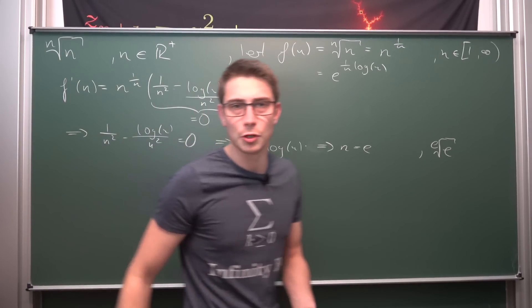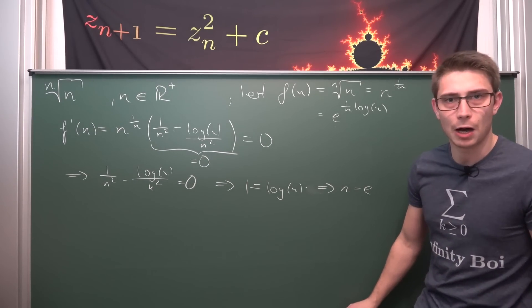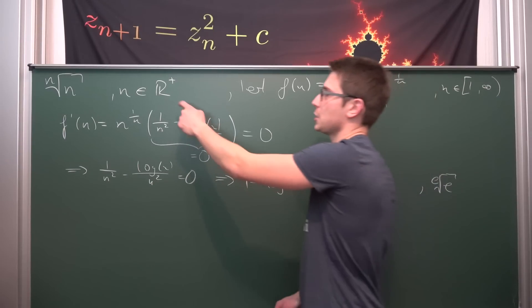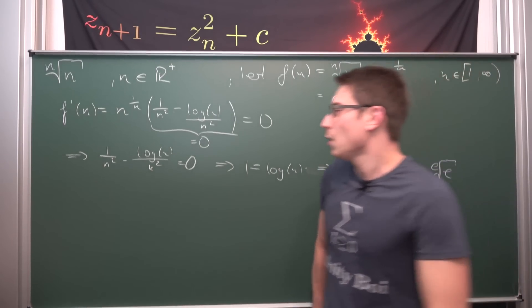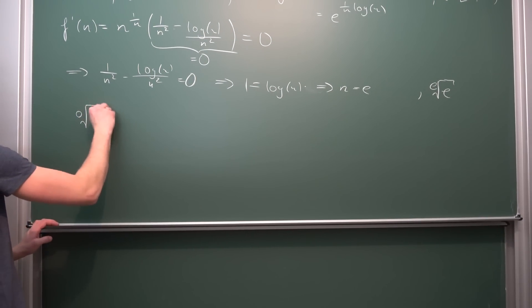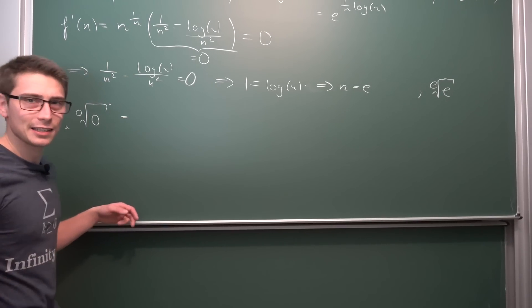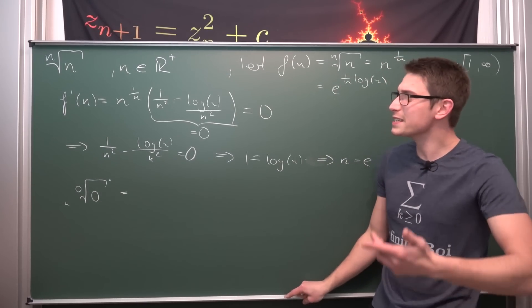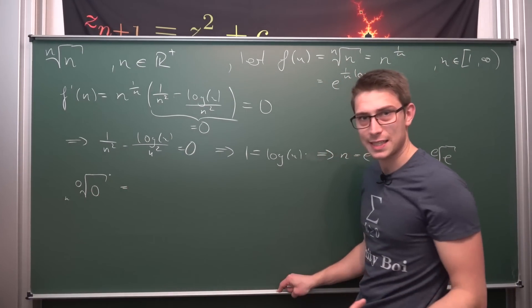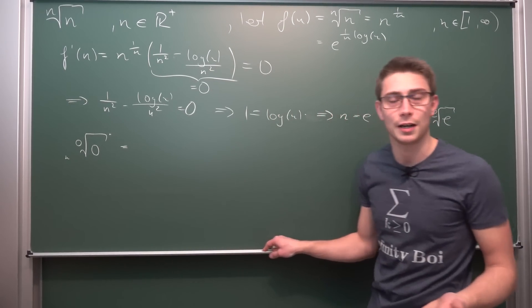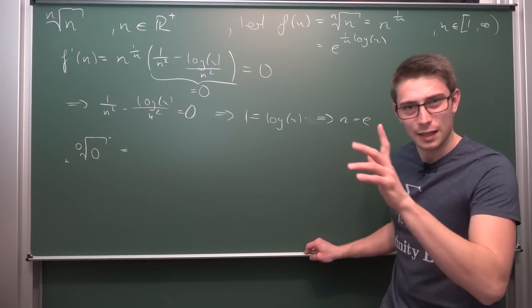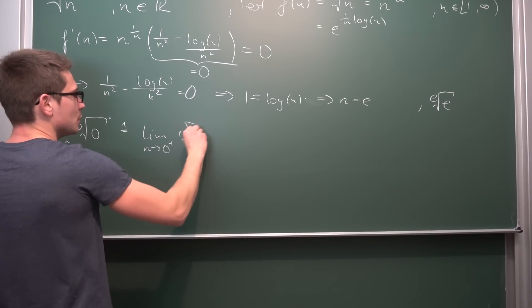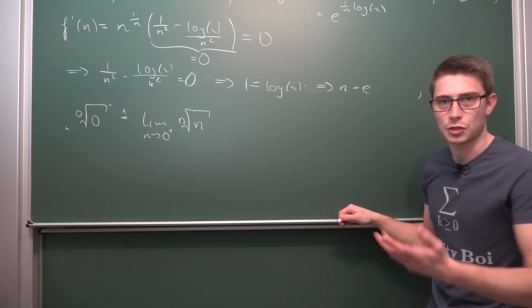Now we want to sketch the graph more fully. Originally, we defined n to be an element of the positive real numbers including 0. So what about the behavior at 0? The 0th root of 0 is a bit weird. We can't approach from the left-hand side because the nth root is not defined for negative arguments. So strictly speaking, we need to evaluate the limit as n approaches 0 plus of the nth root of n.